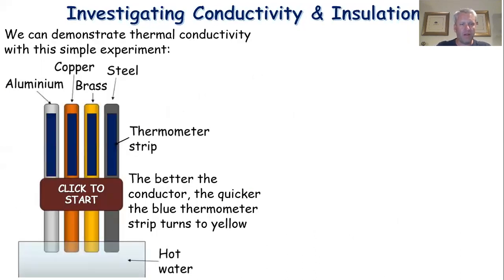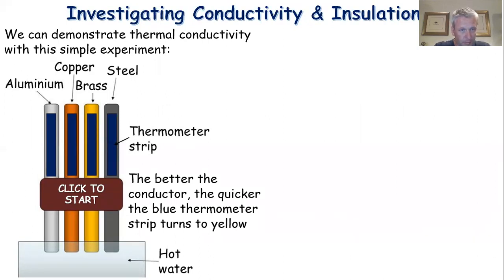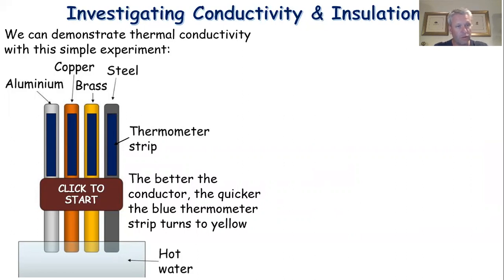In the first experiment, we have four different metal bars with equal dimensions - the same length and same diameter - all placed into a bowl of hot water to the same depth. On each bar there is a thermometer strip, like those you stick on the side of a fish tank or on your forehead that changes colour with temperature. The better the conductor, the quicker the thermometer strip turns from blue to yellow.